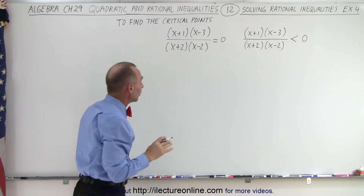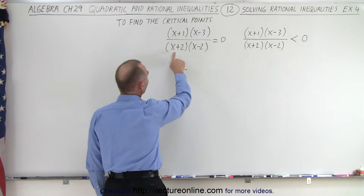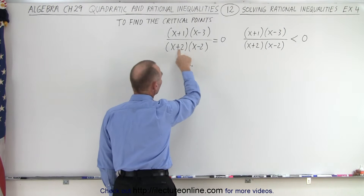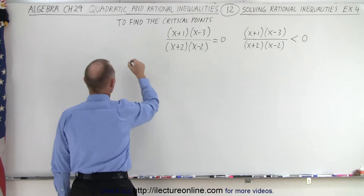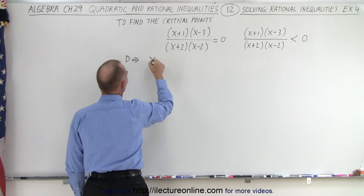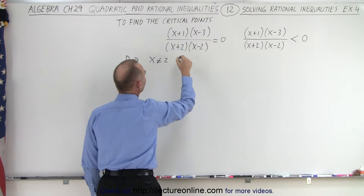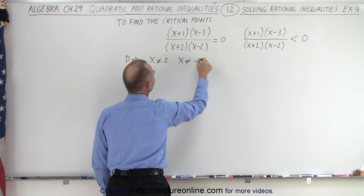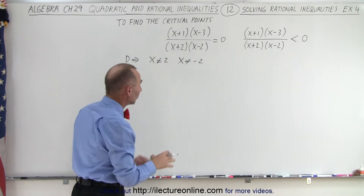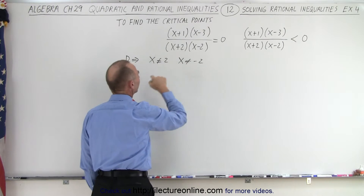To find the critical points we need to look at both the denominator and the numerator. In the denominator, if x equals negative two or x equals positive two, that will make the denominator equal to zero. So x cannot equal two and x cannot equal negative two, because either one will make the denominator zero, meaning the expression will be undefined. These are two critical points.